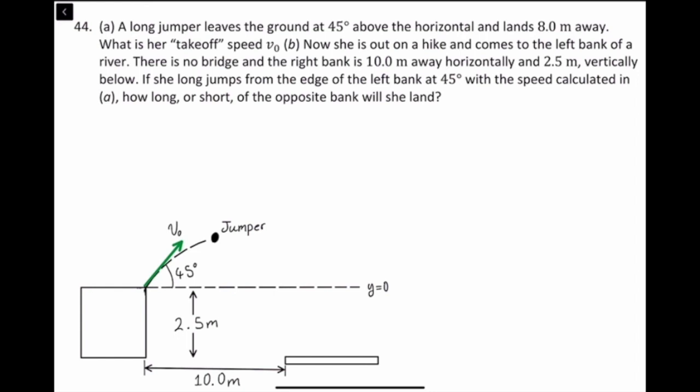For part B, she is out on a hike and comes to the left bank of a river. There is no bridge and the right bank is 10 meters away horizontally and 2.5 meters vertically below. If she long jumps from the edge of the left bank at 45 degrees with the speed calculated in part A, how long or short of the opposite bank will she land?